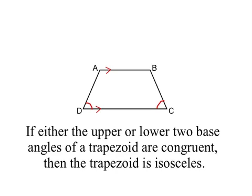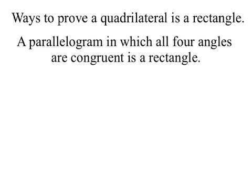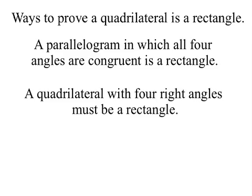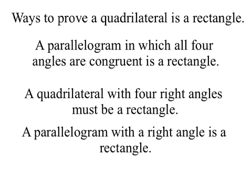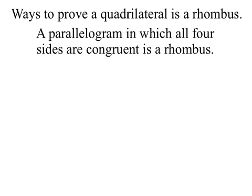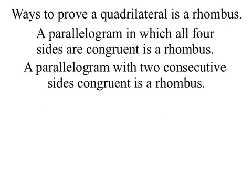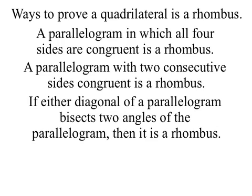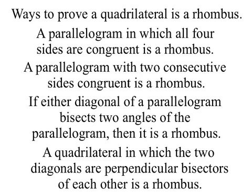It would be a very similar proof for the upper two base angles being congruent. To summarize: the ways to prove a quadrilateral is a rectangle are — a parallelogram with all four angles congruent is a rectangle; a quadrilateral with four right angles must be a rectangle; a parallelogram with a right angle is a rectangle; and if a parallelogram has congruent diagonals, it is a rectangle. The ways to prove a quadrilateral is a rhombus are — a parallelogram with all four sides congruent is a rhombus; a parallelogram with two consecutive sides congruent is a rhombus; if either diagonal bisects two angles of the parallelogram it is a rhombus; and a quadrilateral in which the two diagonals are perpendicular bisectors of each other is a rhombus.